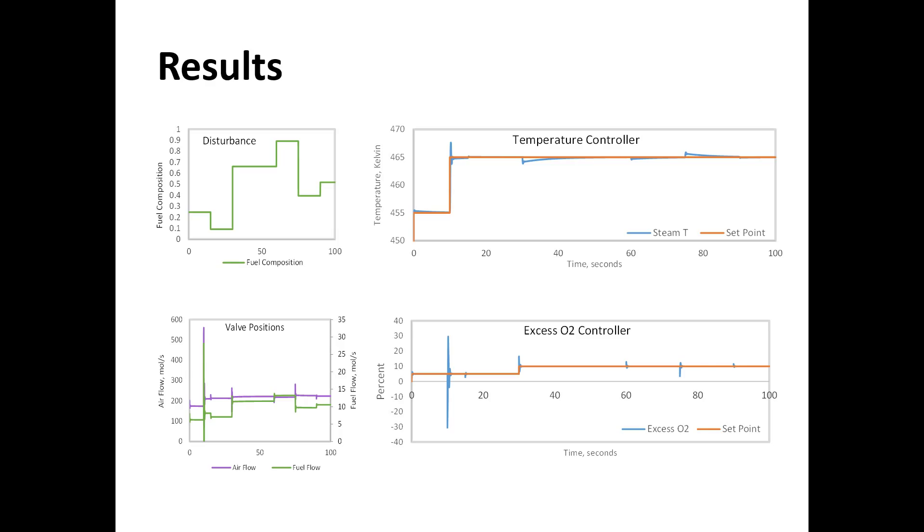We had a set point change in each the amount of excess O2 and the temperature controller, but we tuned our controllers to favor disturbance rejection over set point tracking because the set points won't change very often but the disturbances happen all the time.